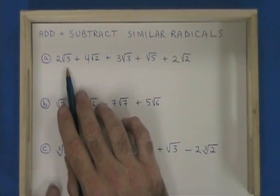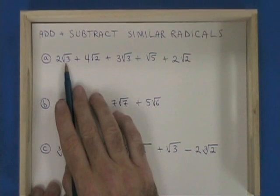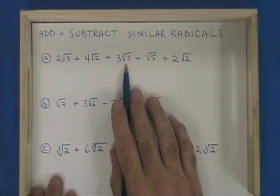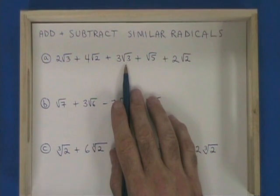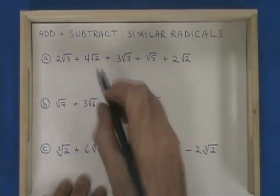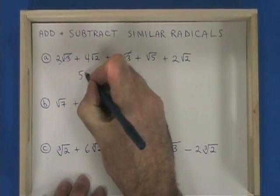Any term with √3 is similar to other terms with √3 and can be combined. 2√3 and 3√3 are the only terms with √3 in this expression. They are similar. Combining them: 2√3 plus 3√3 gives 5√3.